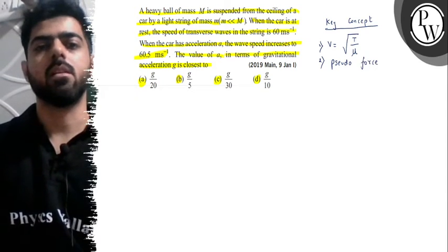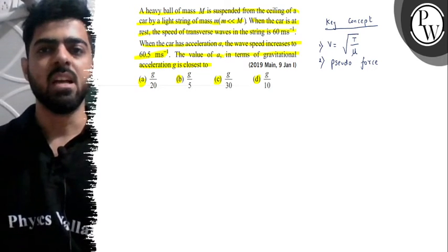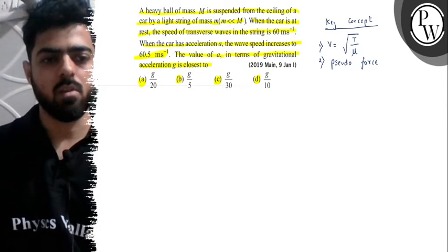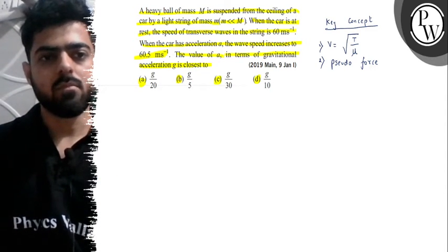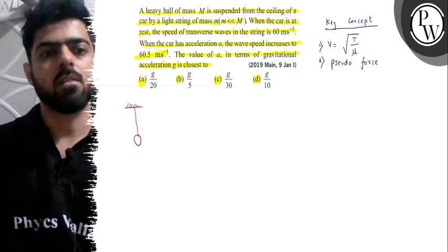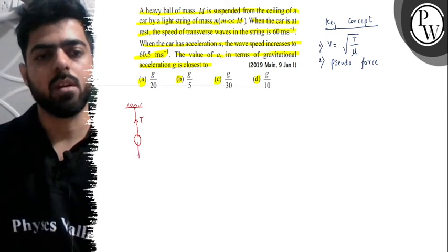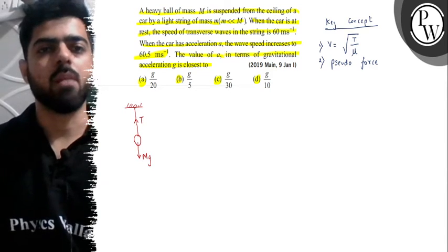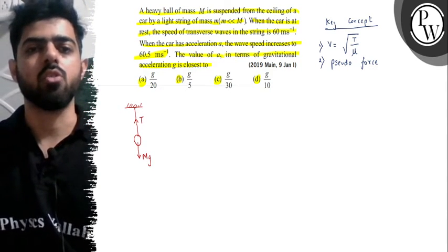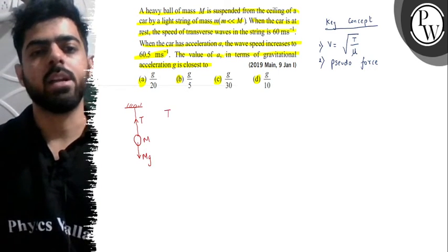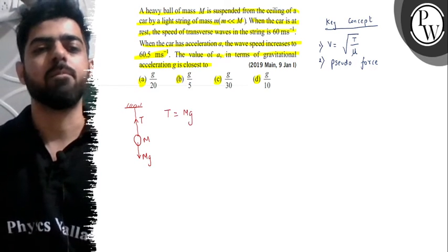We will try to solve this given problem. If we carefully analyze the first situation, the first situation is when the string is tied from the car ceiling and the car is not moving. In this case, we can say tension will develop over here and the weight will be capital M into G below. We will neglect the string's mass because it has been given that the string's mass is very low compared to the mass of this ball.